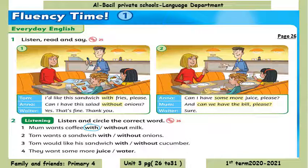Hi, are you ready to order? I'd like a cup of coffee, please, with milk. Coffee with milk. Tom, what would you like? Number two: Can I have this sandwich without onions, please? Yes, that's fine. Number three: Do you want cucumber with the sandwich? Yes, please. So that's the sandwich without onions but with cucumber. Number four.